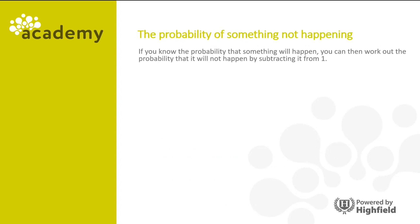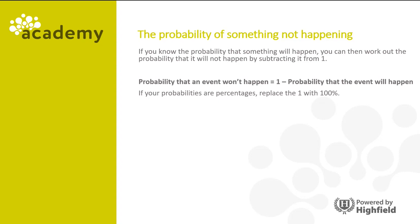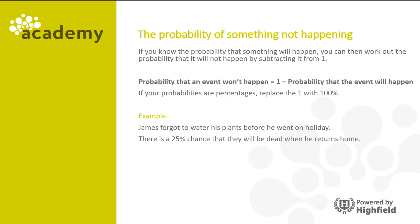If you know the probability that something will happen, you can work out the probability that it won't happen by subtracting it from 1. So the probability that an event won't happen is 1 minus the probability that the event will happen. If your probabilities are percentages, then all you need to do is replace the 1 with 100%. For example, James forgot to water his plants before he went on holiday. There is a 25% chance that they will be dead when he returns home. What's the probability that they will still be alive? The answer is 100% minus 25%, which gives us 75%.